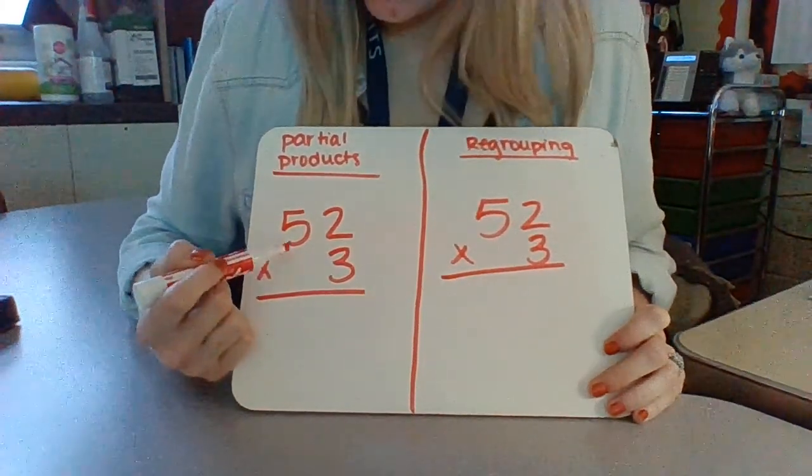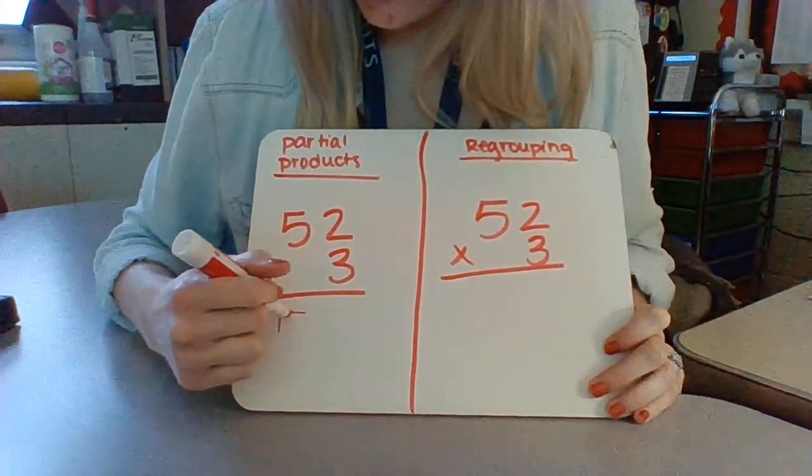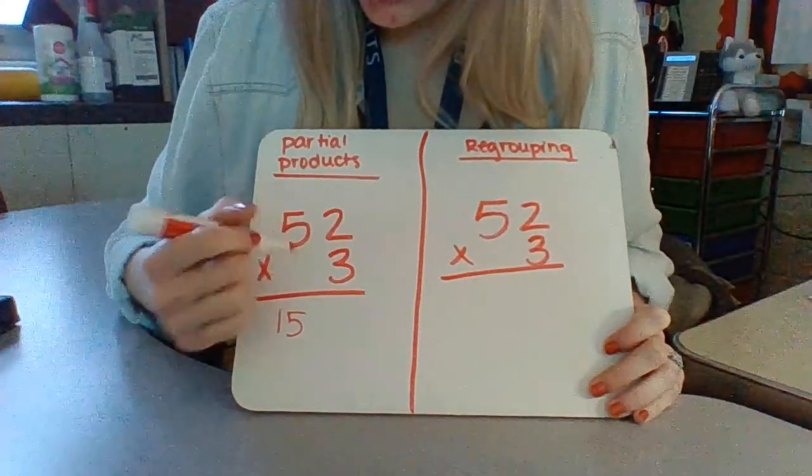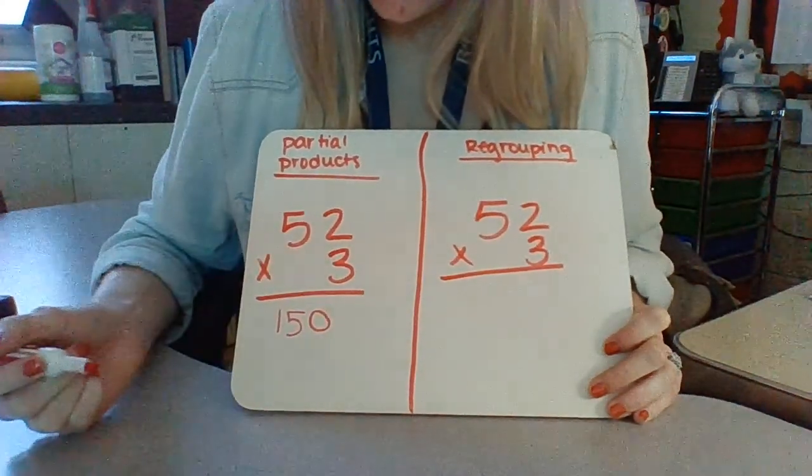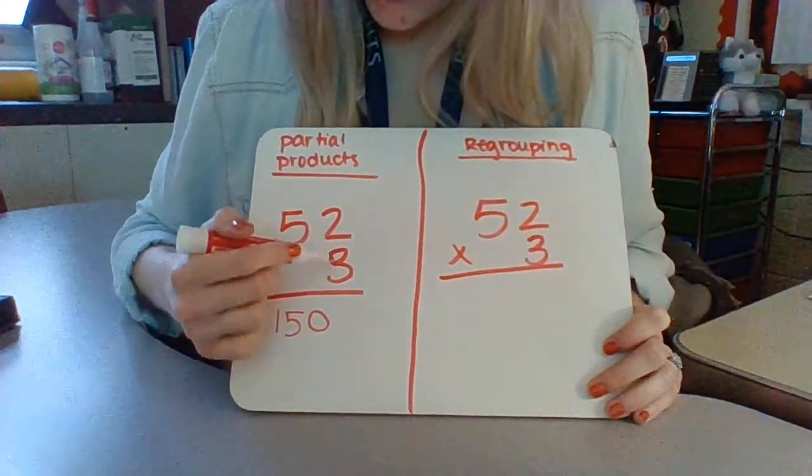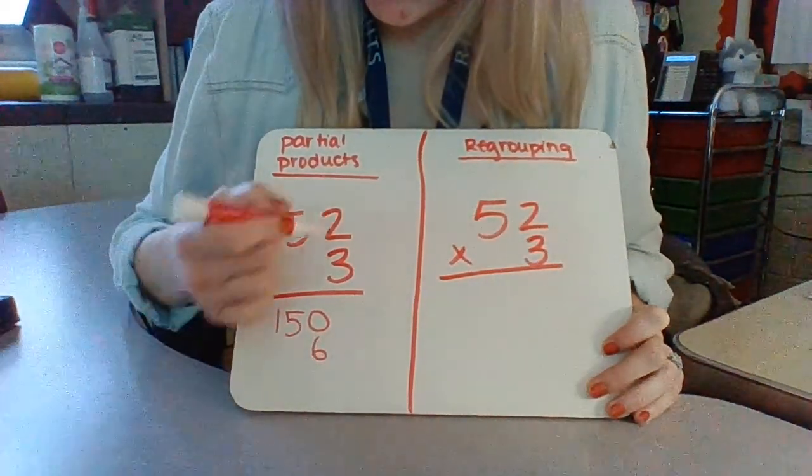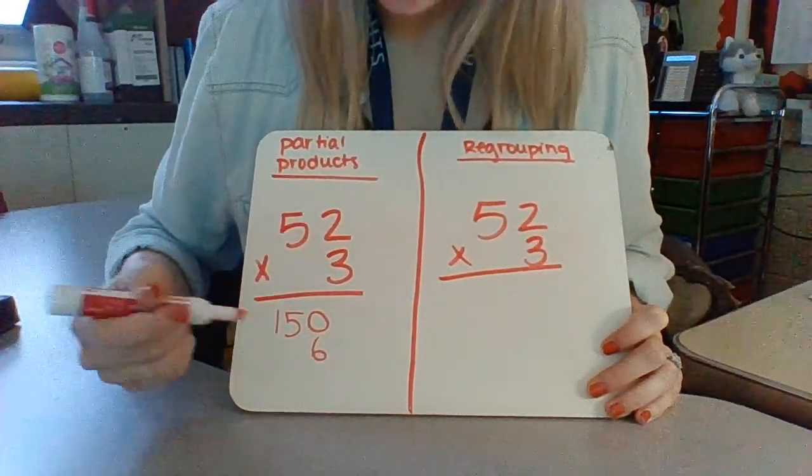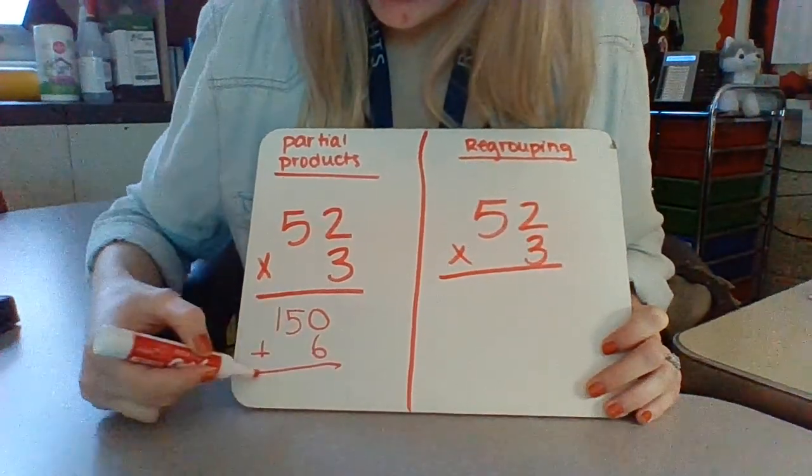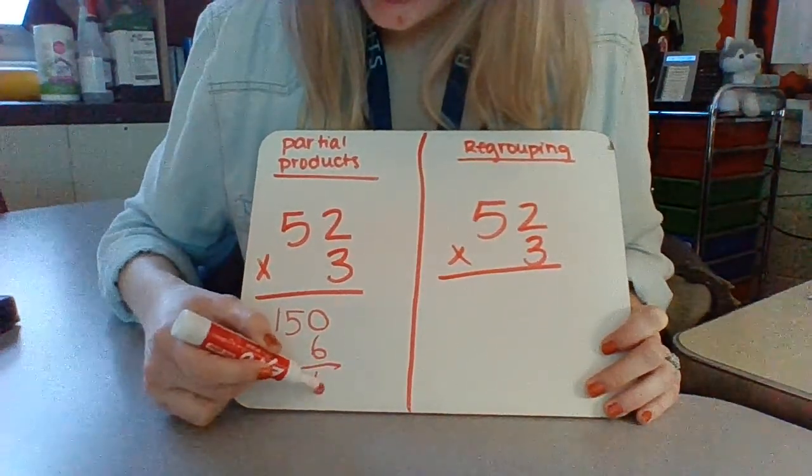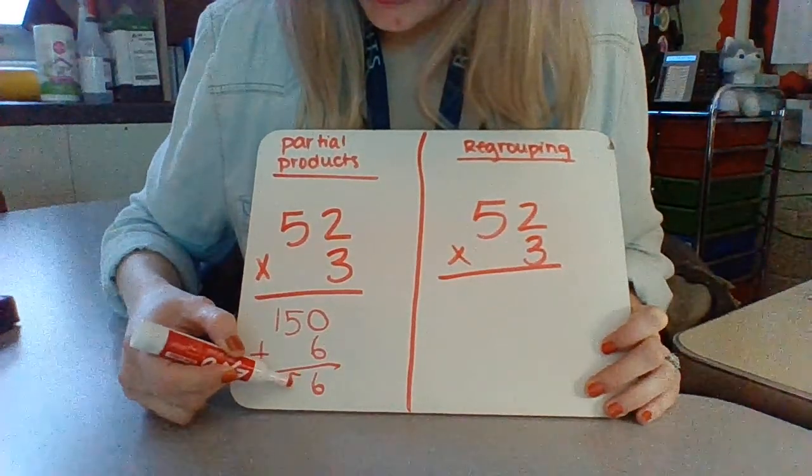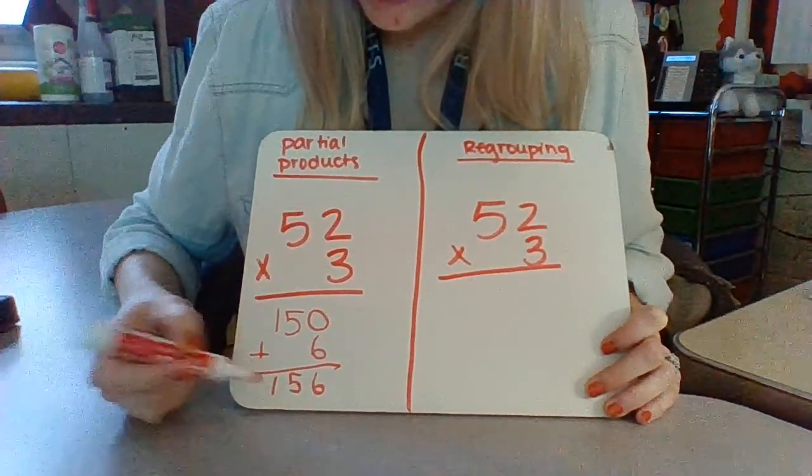3 times 5 is 15, and we're in the tens place so we add a 0. 3 times 2 is 6. We're in the ones place so we don't need a 0. Now we add our partial products up: 0 plus 6 is 6, 5 plus nothing is 5, and 1 plus nothing is 1.